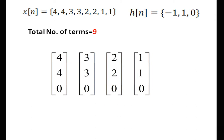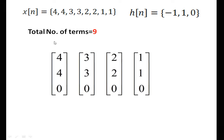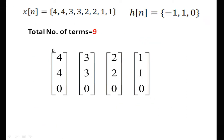The total number of terms in the full convolution are 9, because the length of x is 8 and length of h is 2; 8 plus 2 minus 1 equals 9. We take the input in groups of 3 with 1 appended zero each: first input is 4, 4, 0; second input is 3, 3, 0; third is 2, 2, 0; and fourth is 1, 1, 0. We perform the circular convolution 4 times with this h of n. Convolution is a commutative operation, so we circulate h of n and keep it the same to make calculations easier.